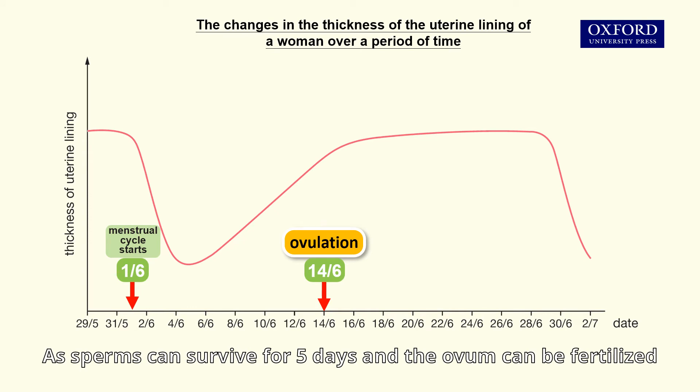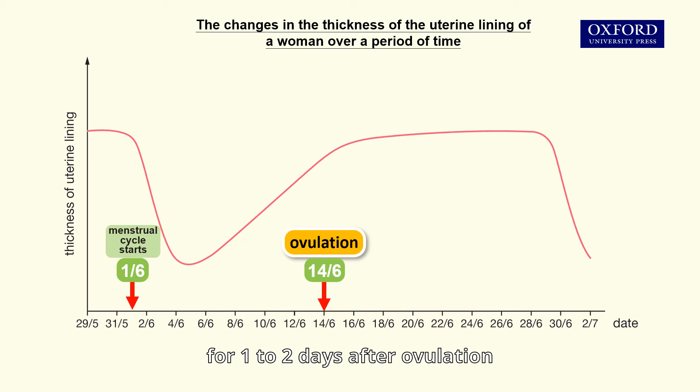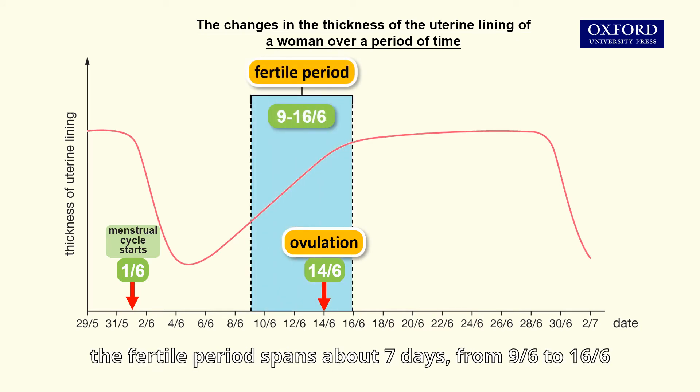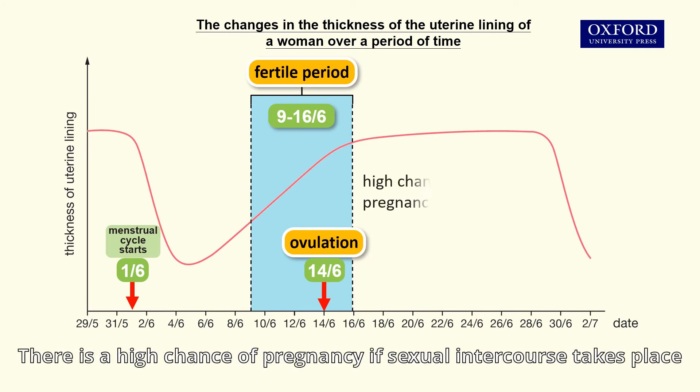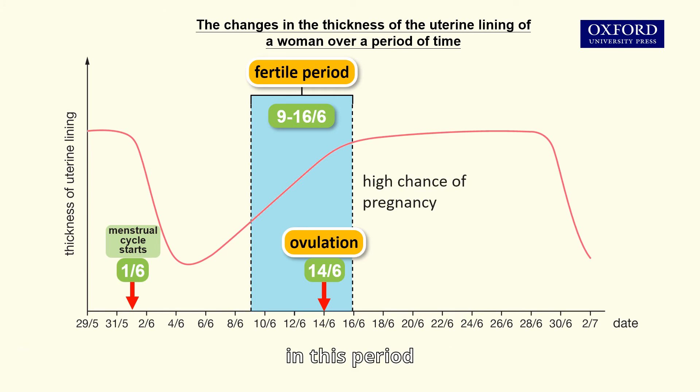As sperm can survive for five days and the ovum can be fertilized for one to two days after ovulation, the fertile period spans about seven days, from the 9th of June to the 16th of June. There is a high chance of pregnancy if sexual intercourse takes place in this period.